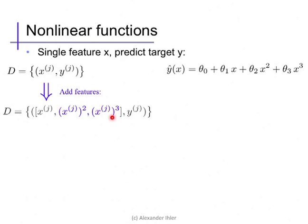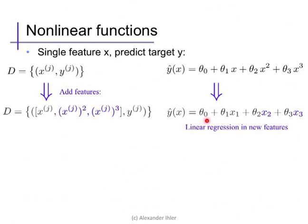Rewriting our predictor, we see that now it's just a linear regression in the new features: theta zero, theta one times our first feature, theta two times the second, and theta three times the third. So we can solve it using exactly the same technique as before.